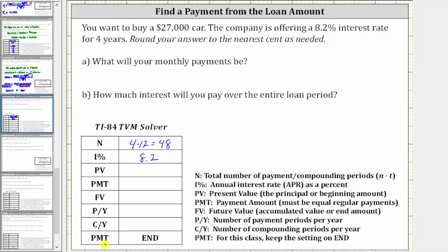PV stands for present value, which is the beginning amount of the loan, or the loan amount, which is $27,000. Because you are receiving $27,000, PV is positive 27,000. PMT is the payment amount, which we are solving for — we'll come back to this.